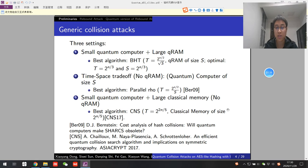The first setting is that we have small quantum computers and large QRAM. In this setting, we have the best generic quantum attack with BHT algorithm. The time complexity and the size of QRAM are both 2 to the 2n divided by 3.